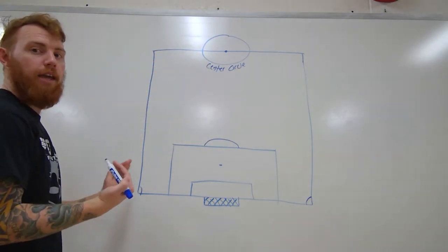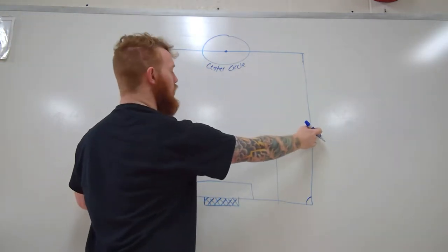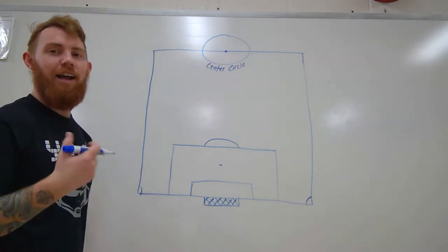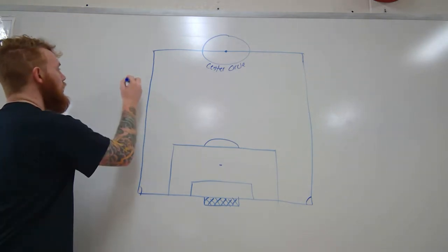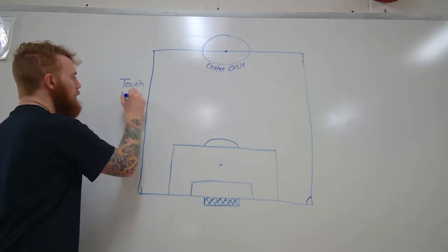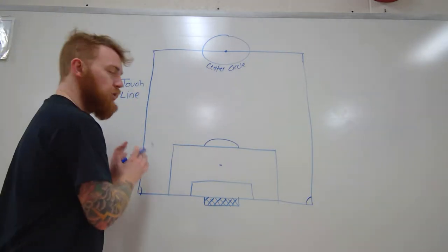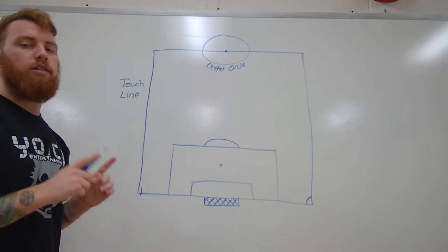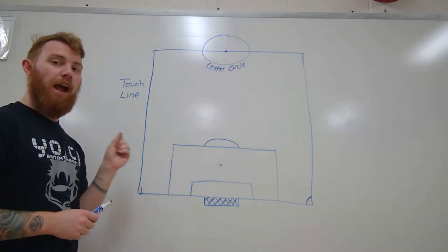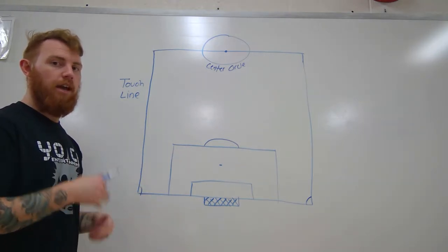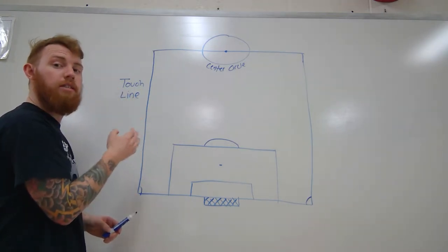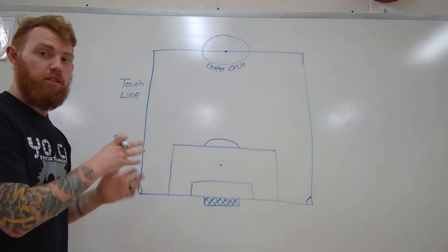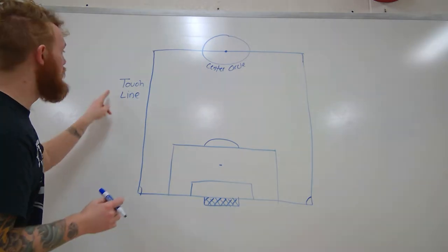Taking it outside — most people call this the sideline because that's what they know from American football or other sports. You can call it a sideline, I'm not going to critique you for that, but it's actually called a touchline. What's interesting about soccer is most other sports, if the ball or a player even touches that line, it's out of bounds automatically. Soccer is one of the few sports where if the ball is still even a fraction of an inch on that line, it is still in play. It doesn't matter if the player themselves is outside — if the ball is still on that line, it's in. That's why I like using touchline: if it still touches, it works.